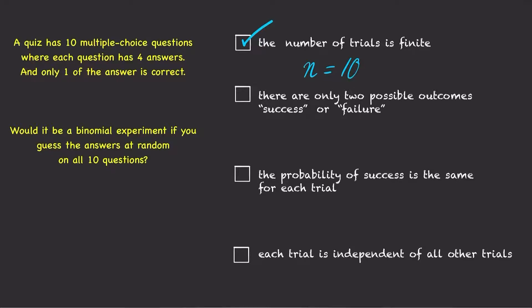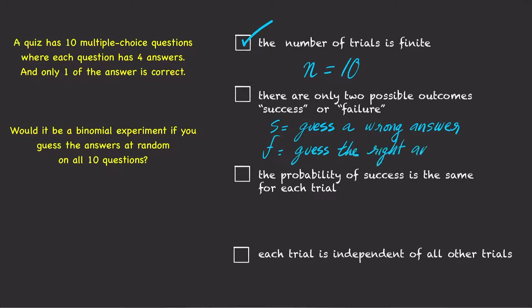The second condition is satisfied because there are only two possible outcomes — we can either call it a success or a failure. We will call it a success if you guess a wrong answer, and we will call it a failure if you guess the right answer.